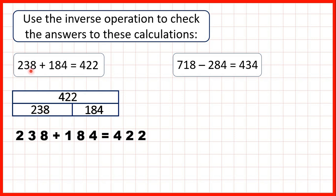Now this bar model gives us the calculation that we've shown here but it also tells us three more calculation facts. It tells us that if we add 184 and then 238 we'll get the same total because with addition you can add numbers in any order and get the same answer. With addition order doesn't matter.